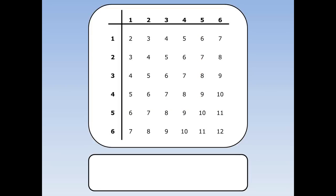Sometimes it's more useful to talk about the total when you throw two dice. One plus one equals two, one and two equals three, one and three equals four, all the way up to six and four is 10, six and five is 11, and six and six is a total of 12. Again there are 36 things that could happen. What's the probability of getting a total of 10? Well there are three places I get a total of 10 when I throw two dice, three times out of 36. So the chance is three out of 36.